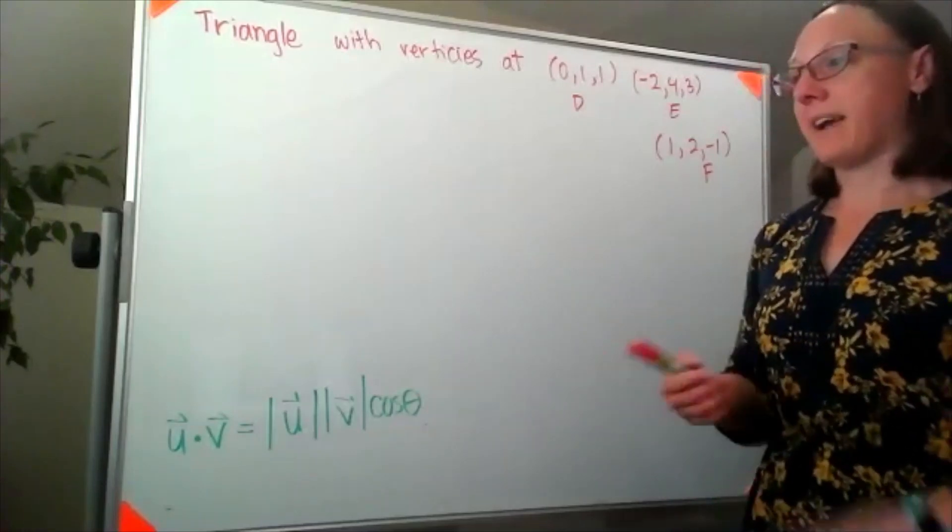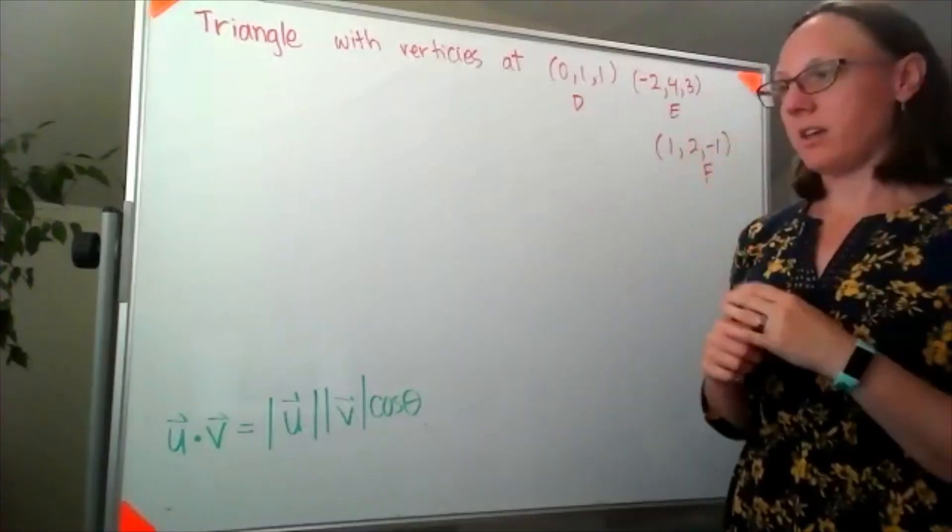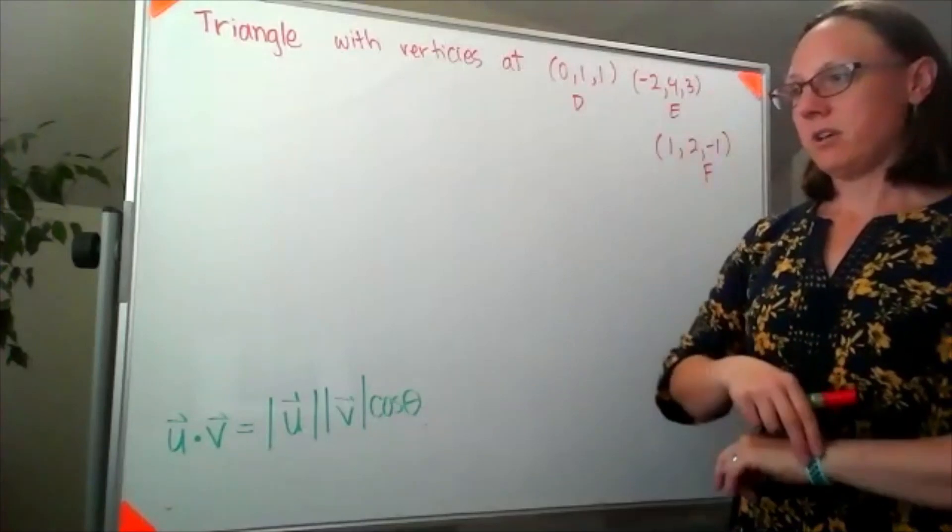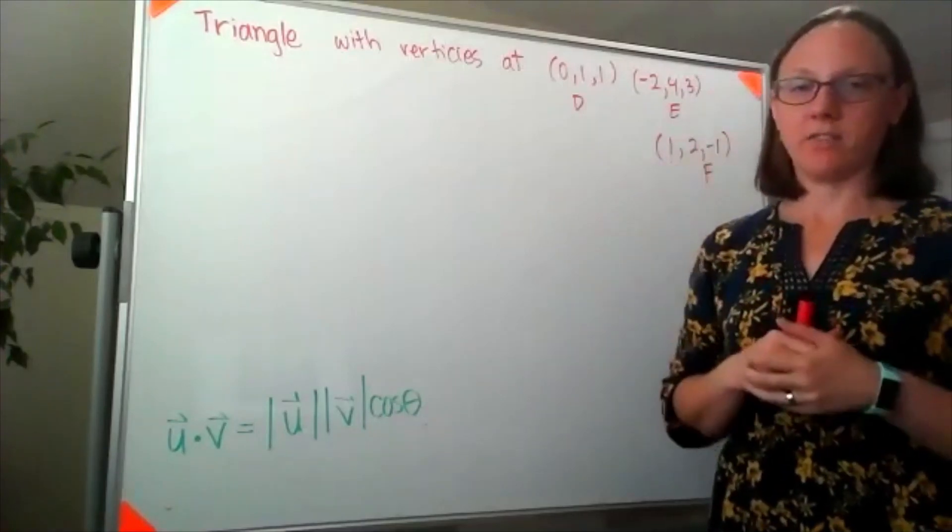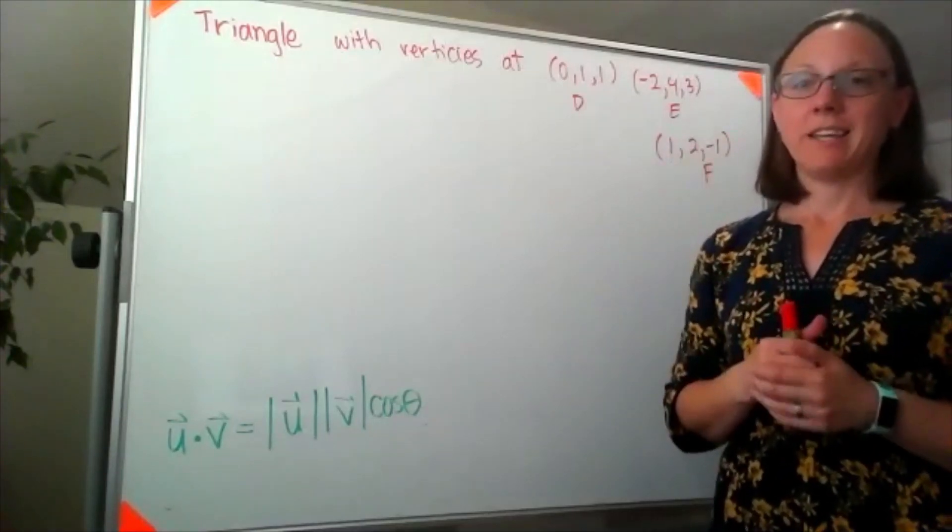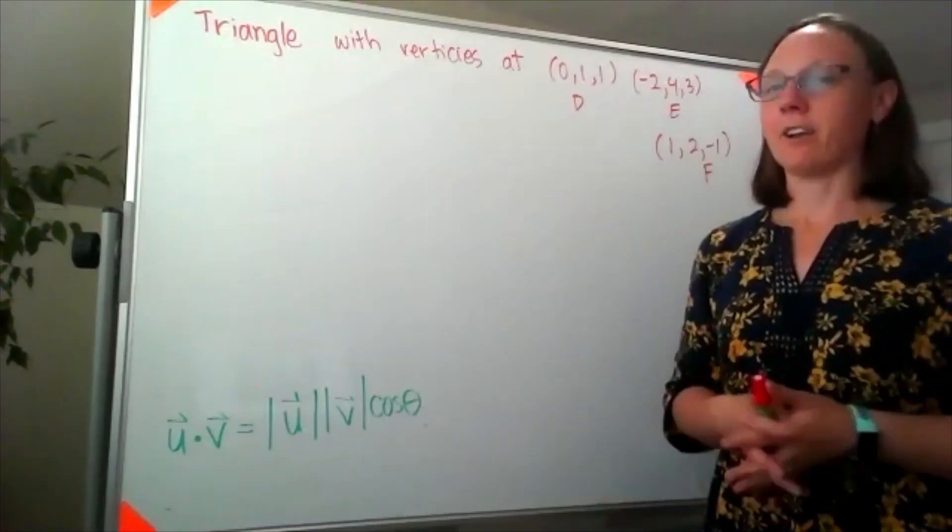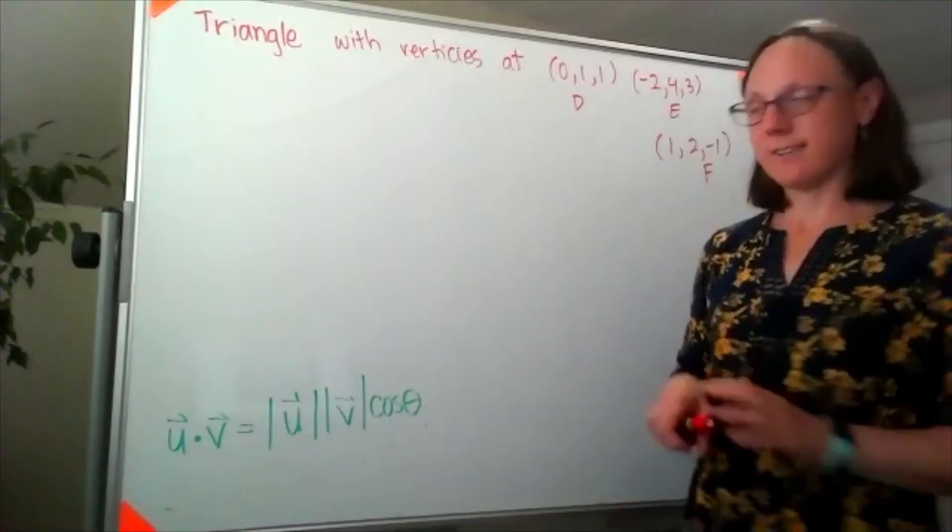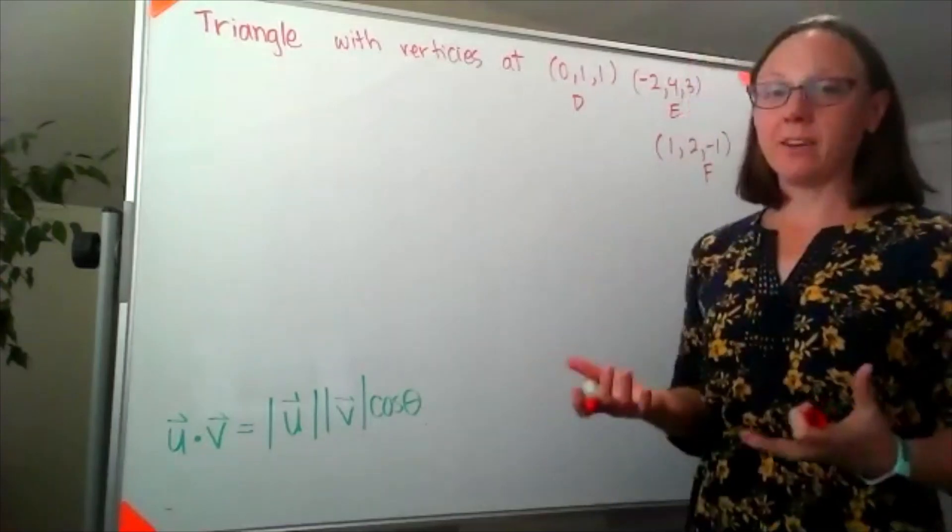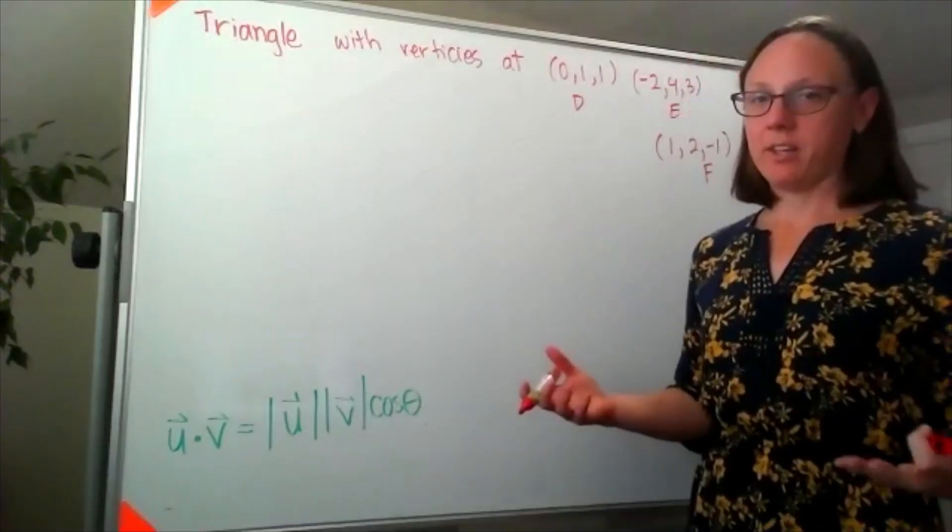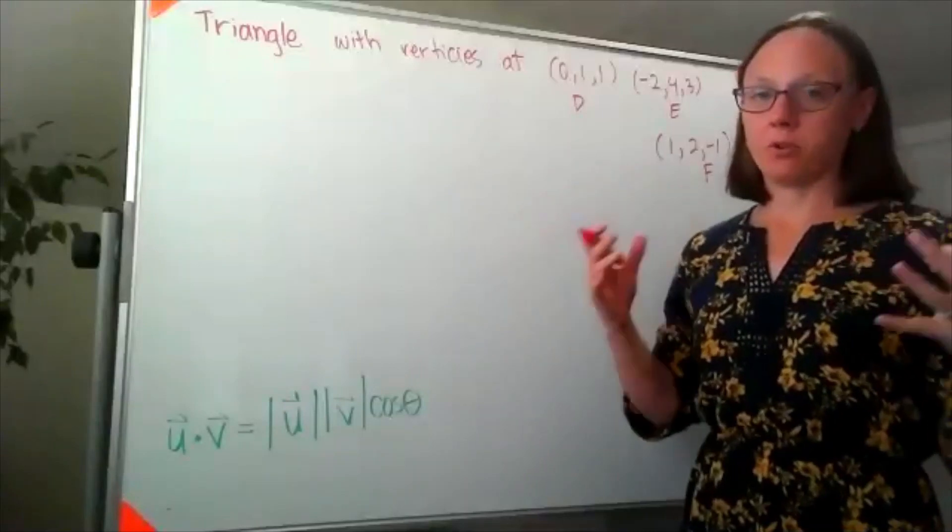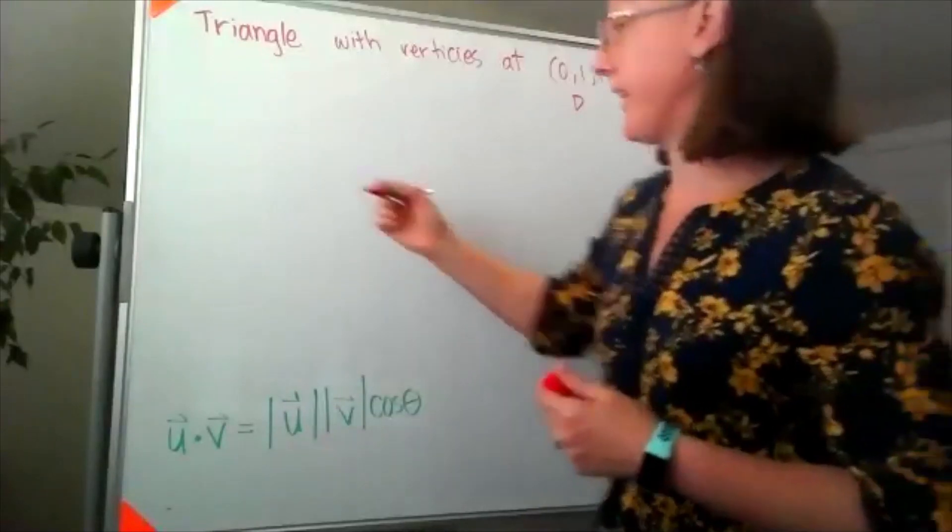We have been asked to find the angle for each of the vertices of this triangle. My first piece of advice is to not try to graph those points in three dimensions. I really only need a fake graph to kind of conceptualize what is happening here.